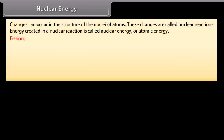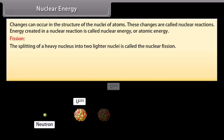Fission. The splitting of a heavy nucleus into two lighter nuclei is called the nuclear fission. When a slow neutron strikes a uranium 235 nucleus, it is absorbed by the nucleus and an unstable isotope of uranium U 236 is formed which immediately breaks into two fragments, emitting two or three neutrons with release of enormous amount of energy. The reaction may be expressed as...